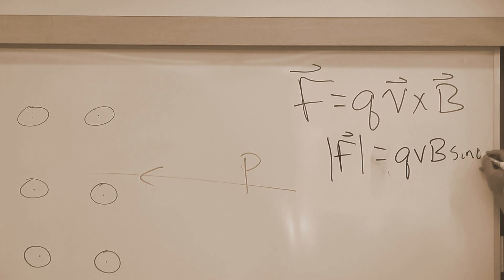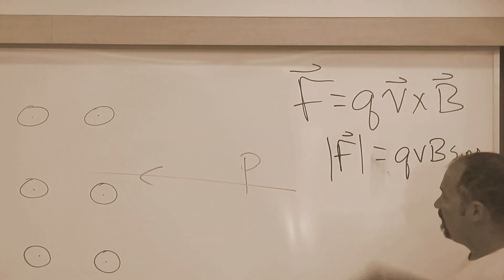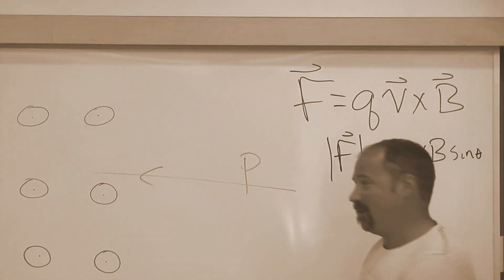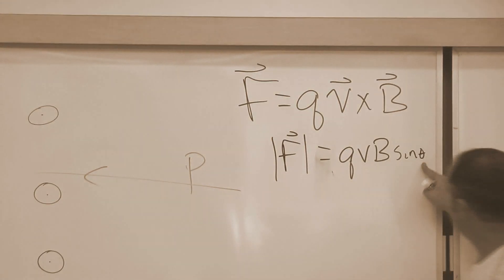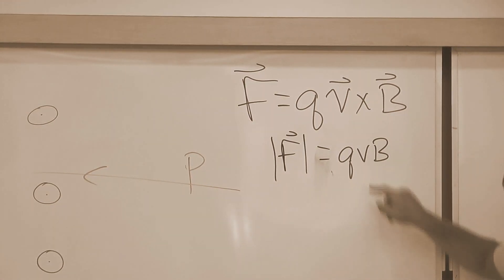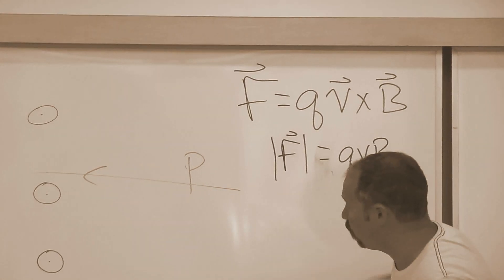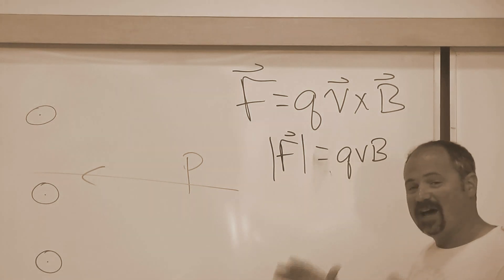And sine theta, where this is the angle between the two. Now, here we have it coming at a right angle. I mean, the magnetic field is going this way, protons are going that way. That's a right angle. Sine of 90 degrees is 1. So, for our situation, it's simply this. That's the magnitude of the force that will act on the particle as it enters the magnetic field.